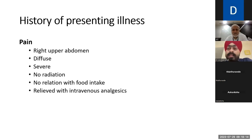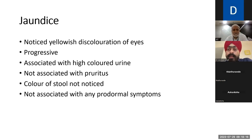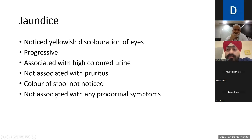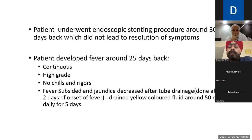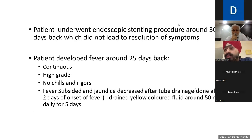The patient also had jaundice, which she noticed as yellowish discoloration of the eyes. The jaundice was progressive, associated with high-colored urine. It was not associated with pruritus. The patient did not notice the color of the stool and it was not associated with any prodromal symptoms.